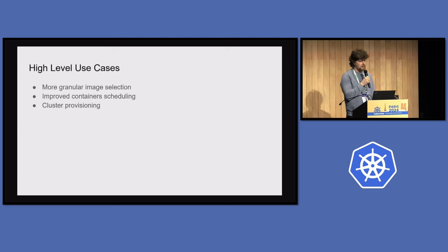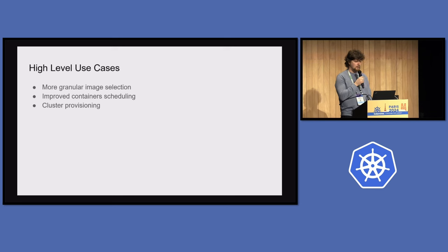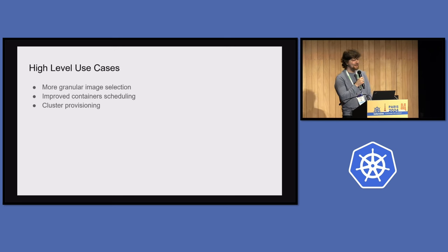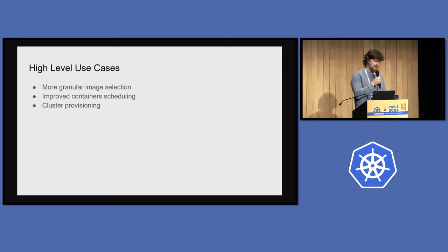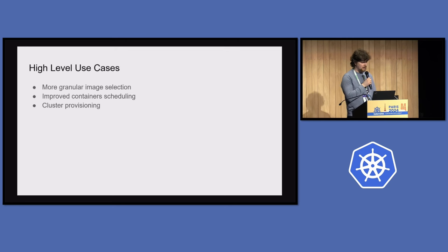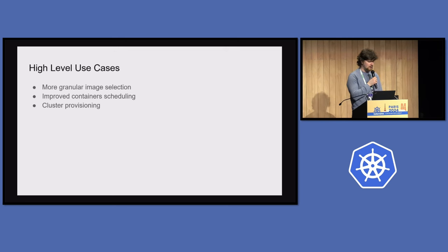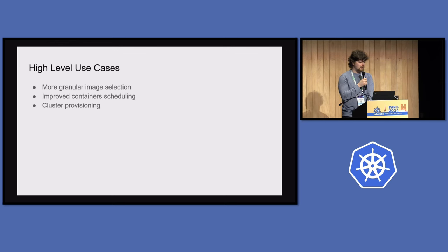As a group we came up with three high-level use cases. First, more granular image selection — today image selection is simple and works for most users, returning the first matching image, but sometimes something more complex is needed. Second, improved container scheduling: once you provide compatibility metadata, scheduling can be smarter. Third, cluster provisioning — the metadata gives sysadmins better information for reconfiguration, and allows optimizing the cluster for specific workload types.